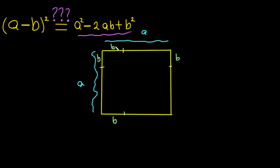...we know this side is 'a' and here is 'b', so this one will be (a minus b), because the whole thing minus this one gives me this one. And of course here it will be the same: (a minus b). And from this point to this point: (a minus b), and the same here: (a minus b). The last one is also (a minus b).